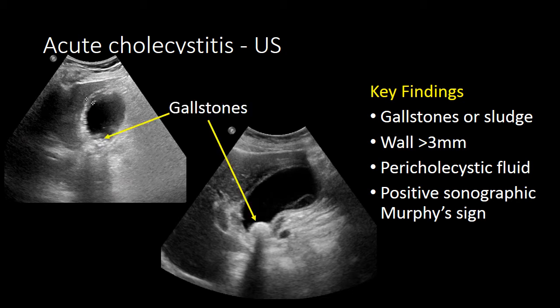In these cases, we see gallstones in the neck of the gallbladder. We can also see gallbladder wall thickening, indicating an inflamed gallbladder wall and acute cholecystitis. These patients also had a positive sonographic Murphy sign, further confirming the diagnosis.